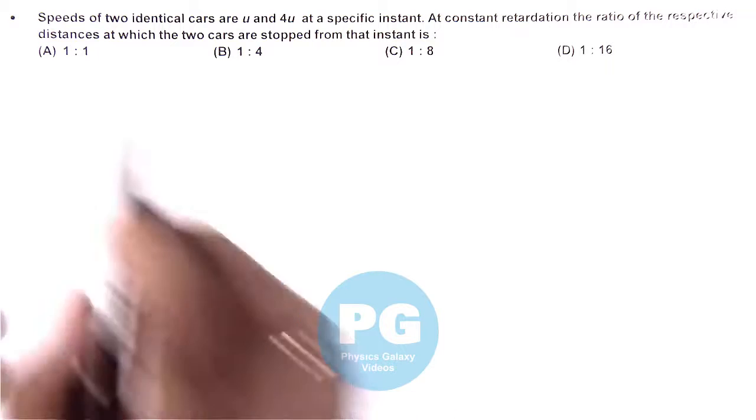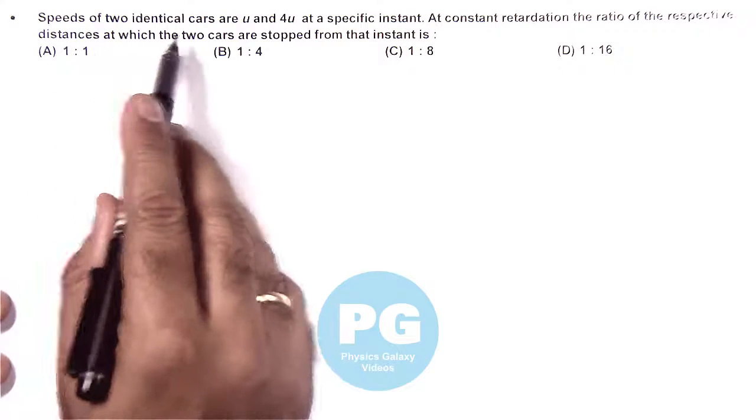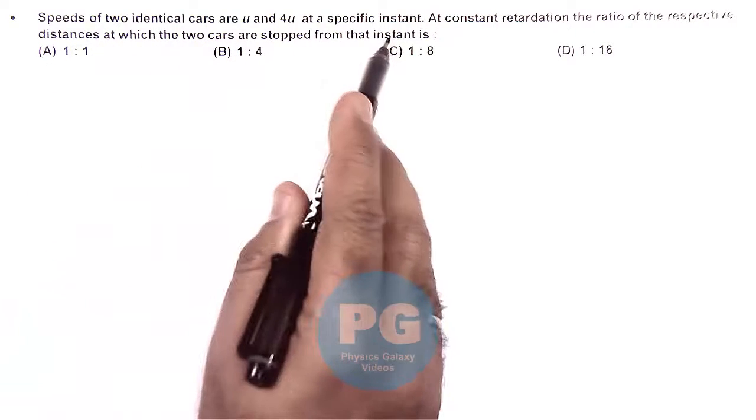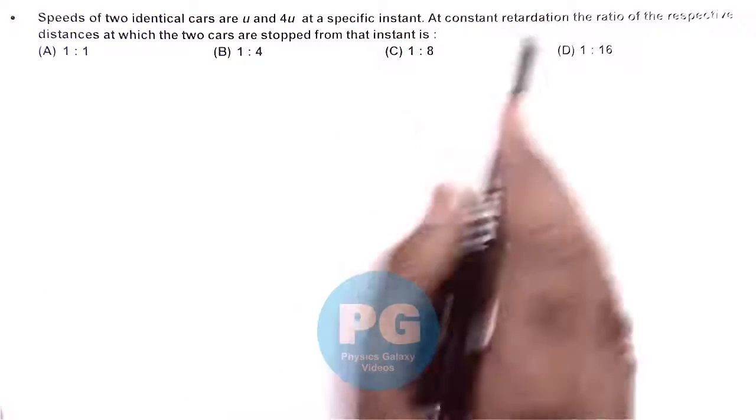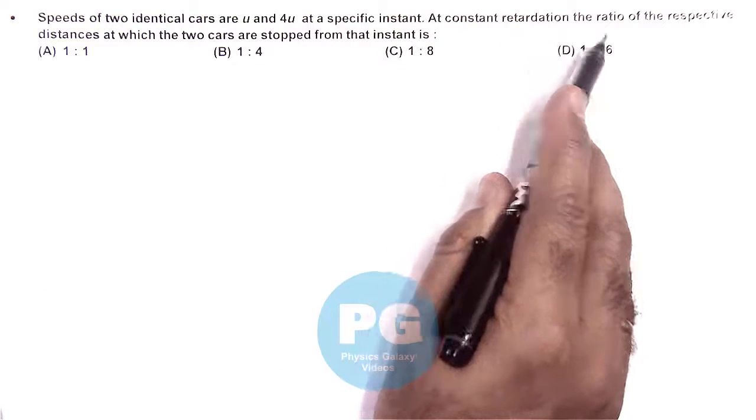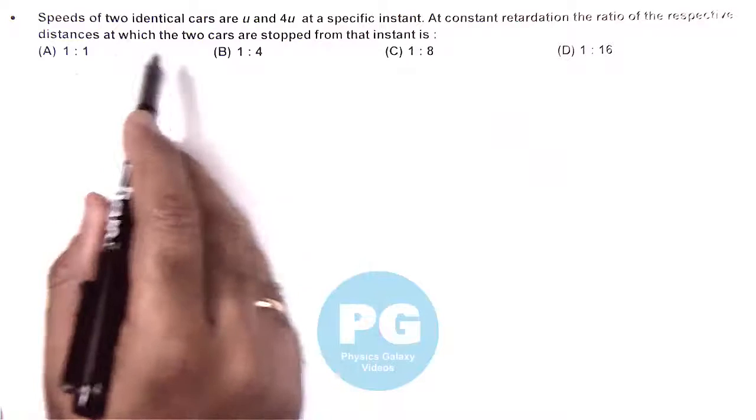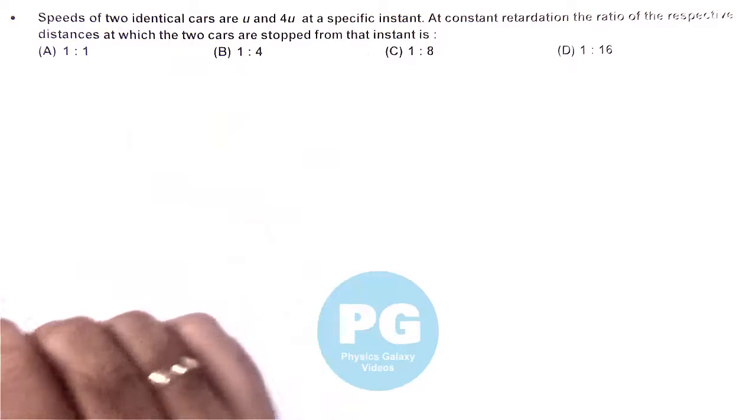In this question we are given that the speeds of two identical cars are u and 4u at a specific instant. At constant retardation, the ratio of the respective distances at which the two cars can be stopped from that instant is...